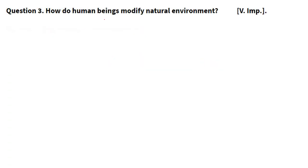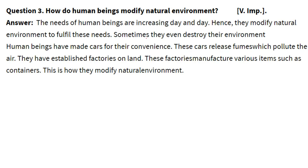How do human beings modify the natural environment? The needs of human beings are increasing day by day, so they modify the natural environment to fulfill these needs — sometimes they even destroy their environment. Human beings made cars for their convenience, but these cars release fumes and gases like carbon dioxide which pollute the air. They have also established factories through industrialization, which manufacture various items but also discharge wastewater into rivers, which is harmful.